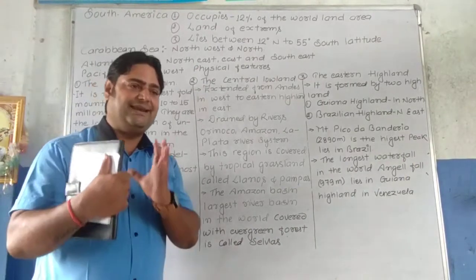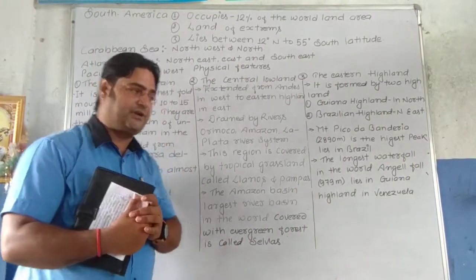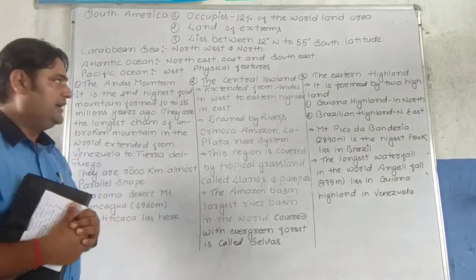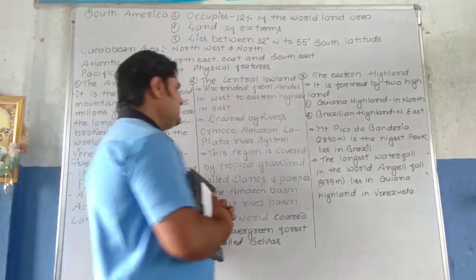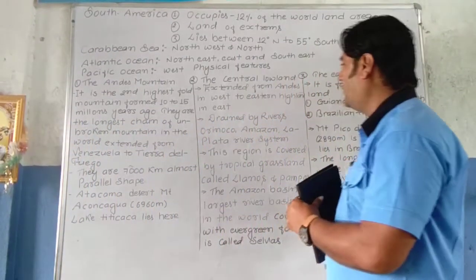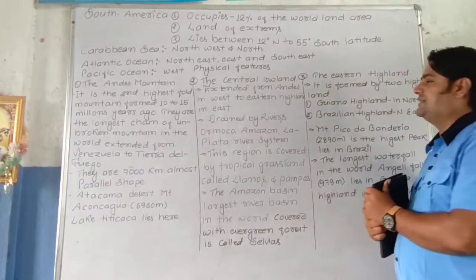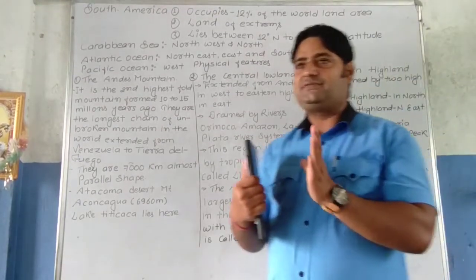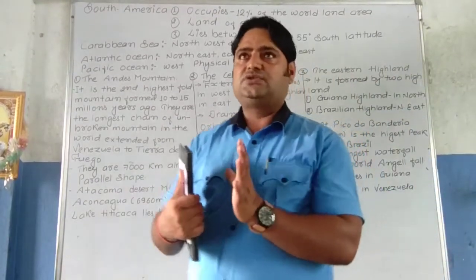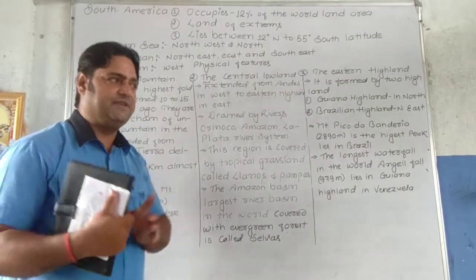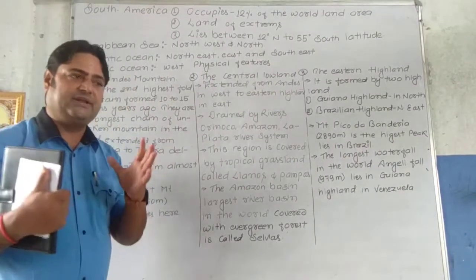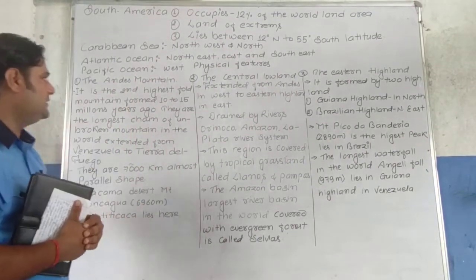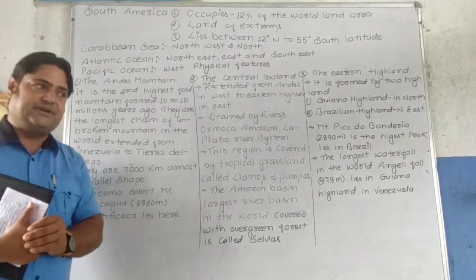South America is formed by three land physical features. The first one is the Andes Mountains. The second one is the Central Lowland, and the third one is the Eastern Highland. By the combination of these three, the topography or physical features of South America has been formed.